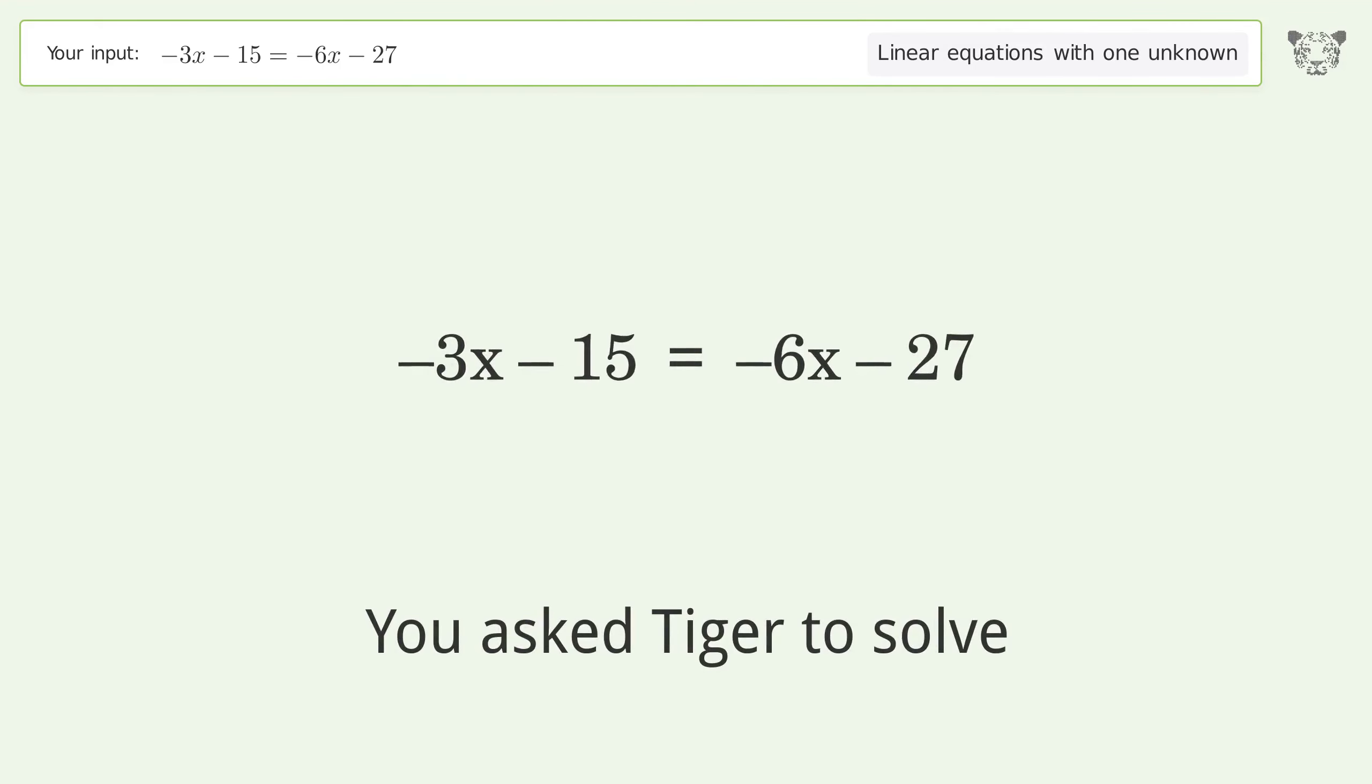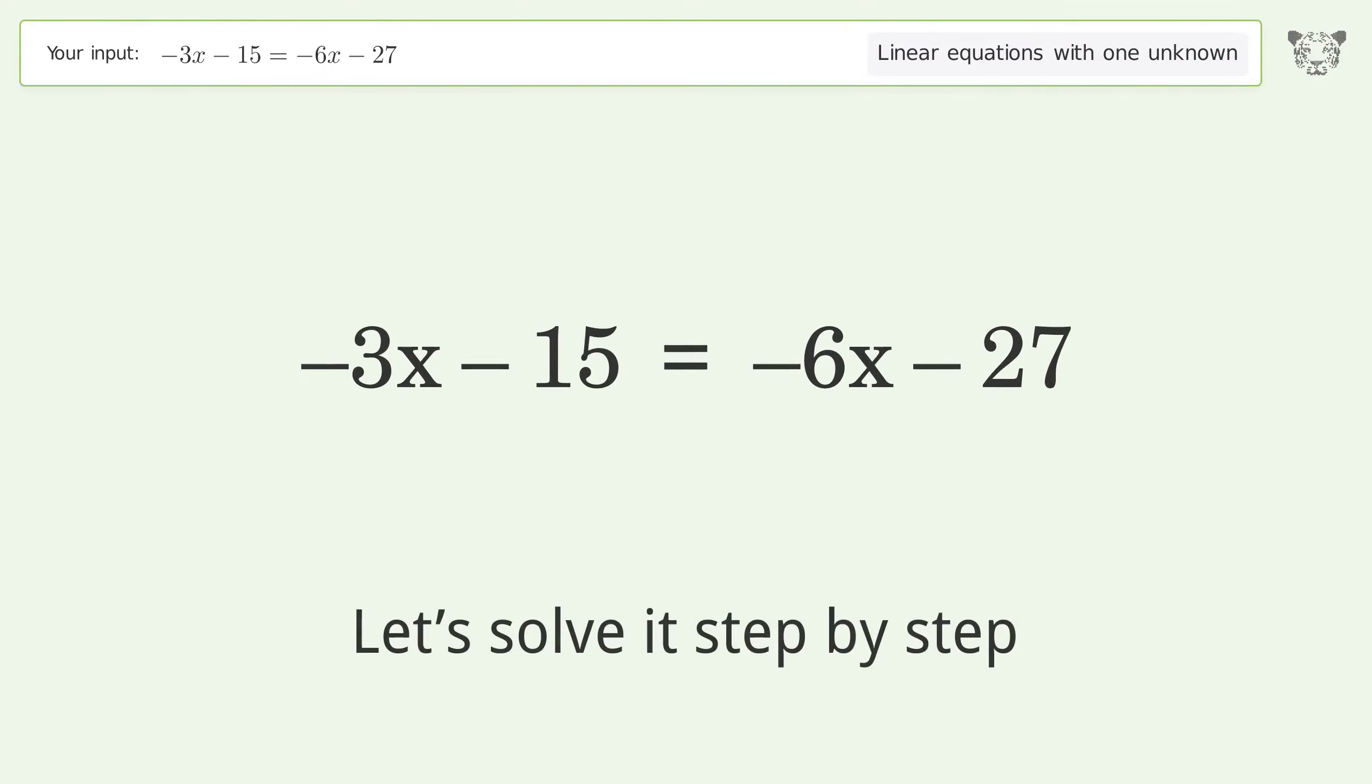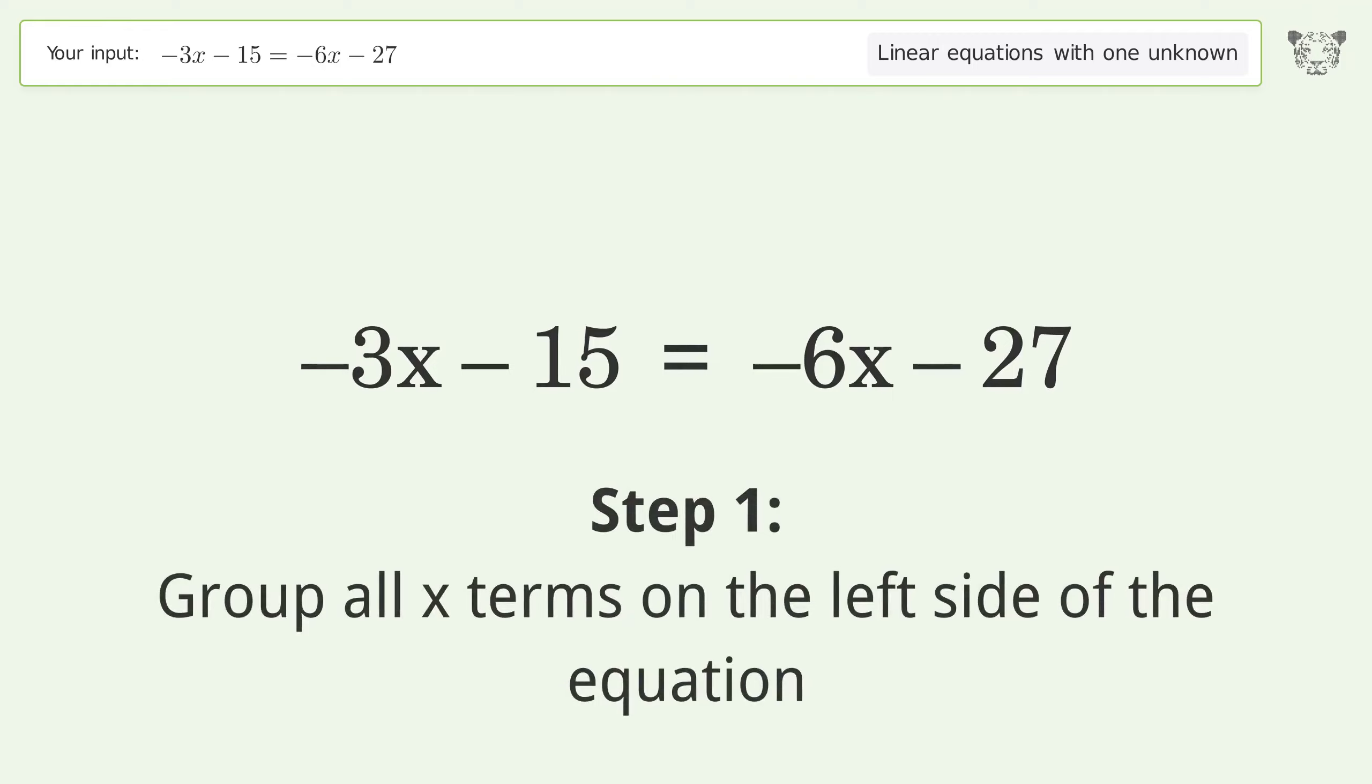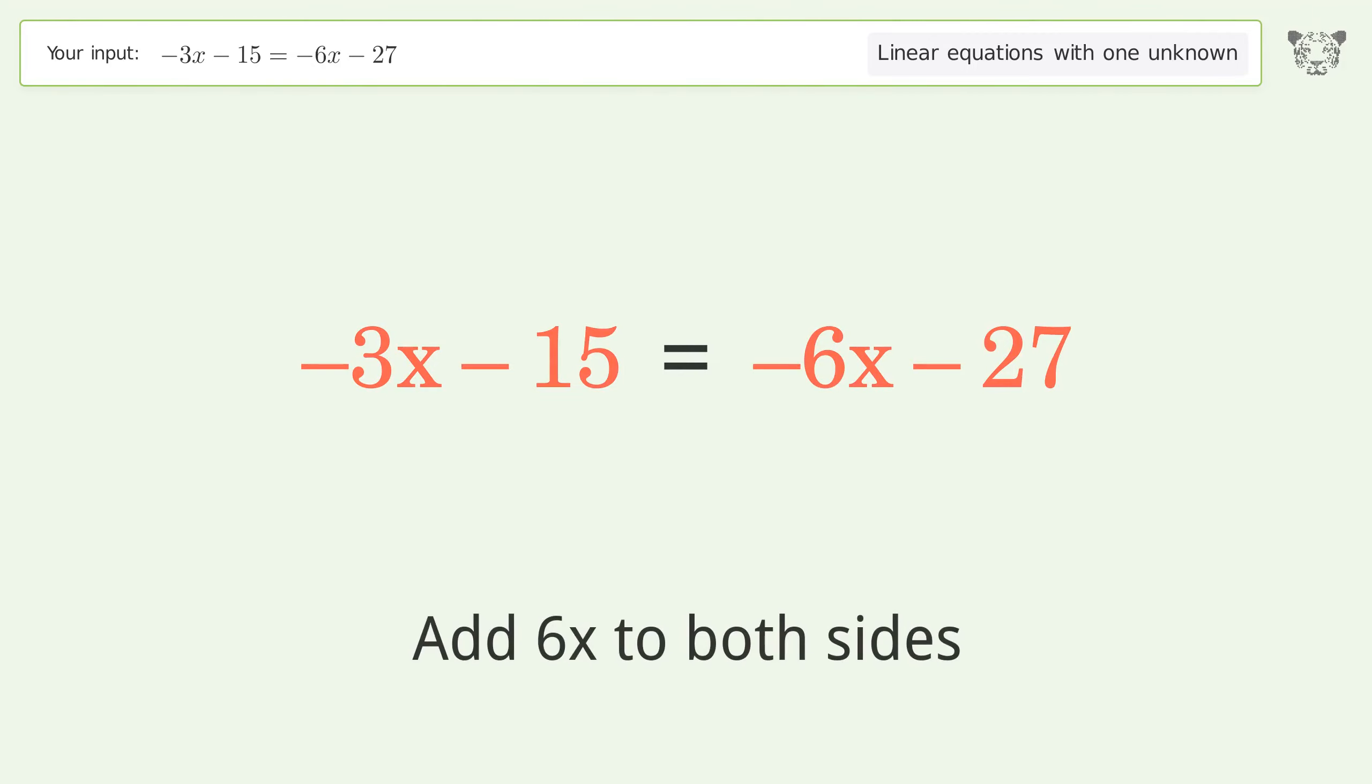You ask Tiger to solve this linear equation with one unknown. The final result is x equals negative 4. Let's solve it step by step. Group all x terms on the left side of the equation. Add 6x to both sides.